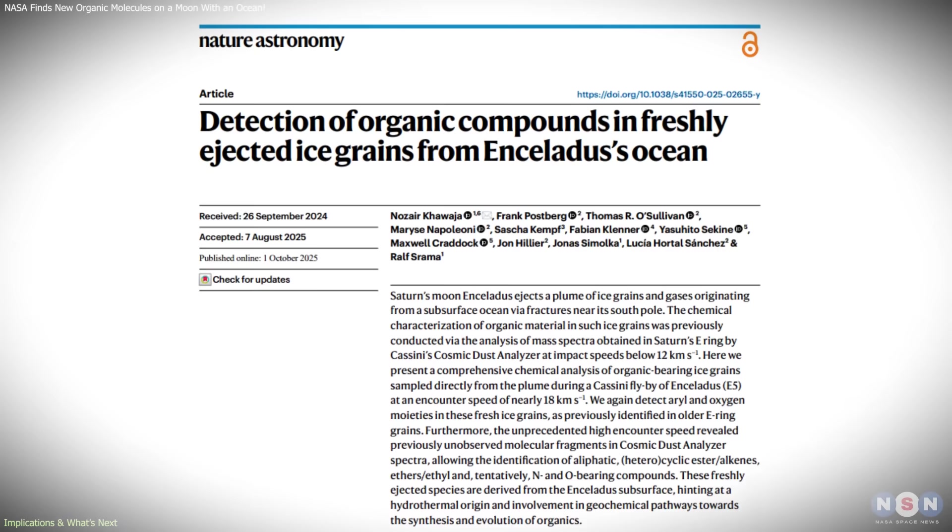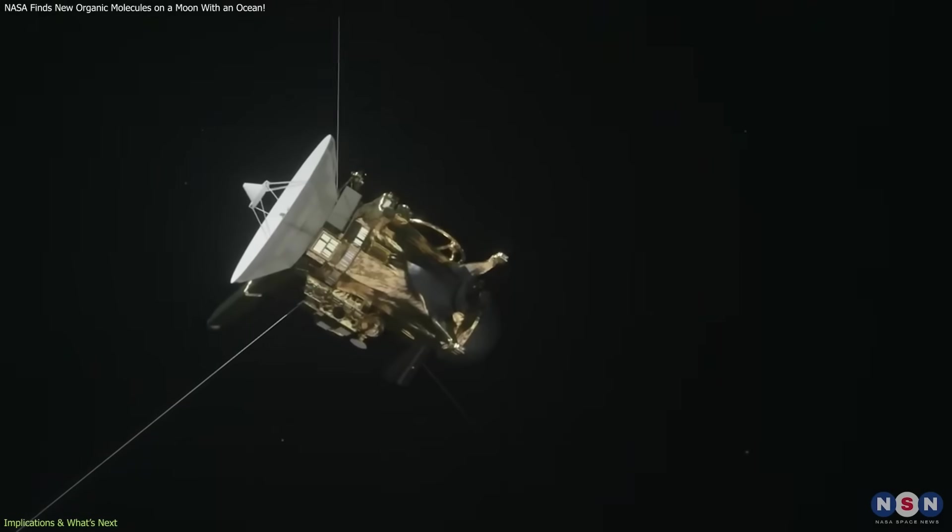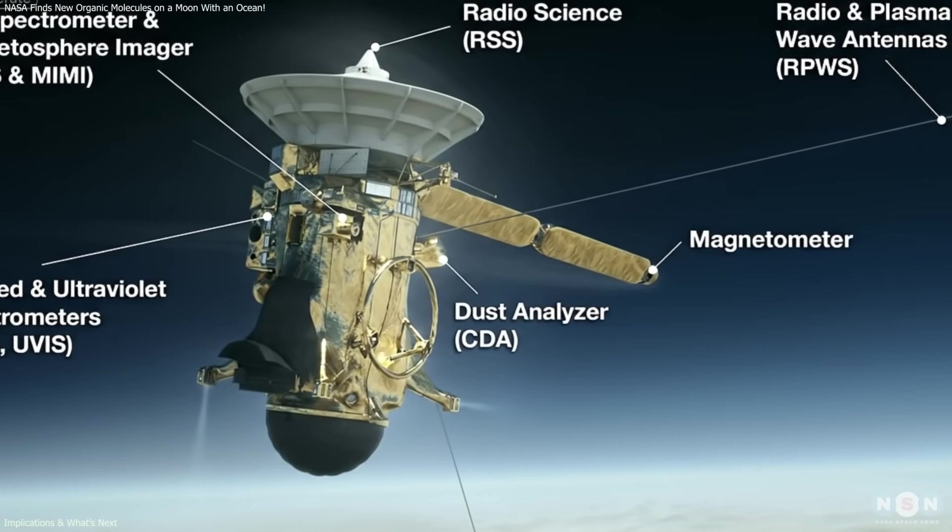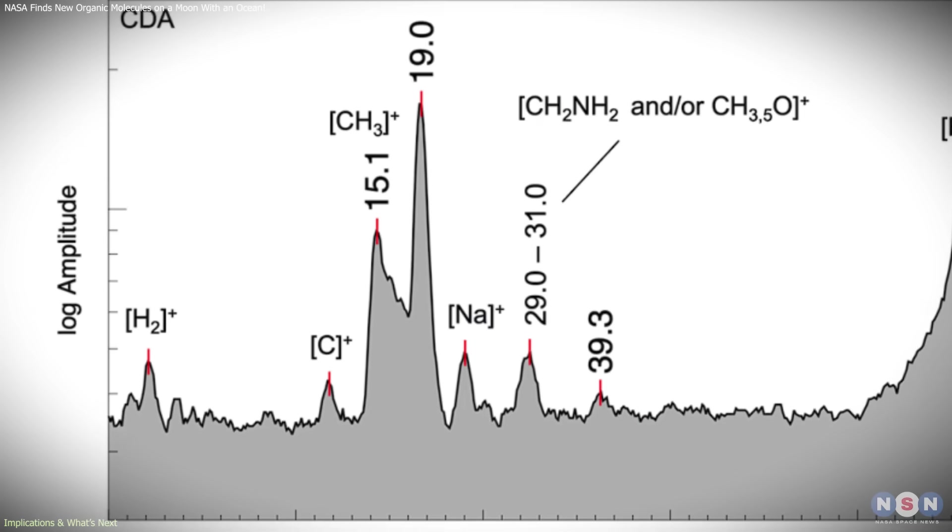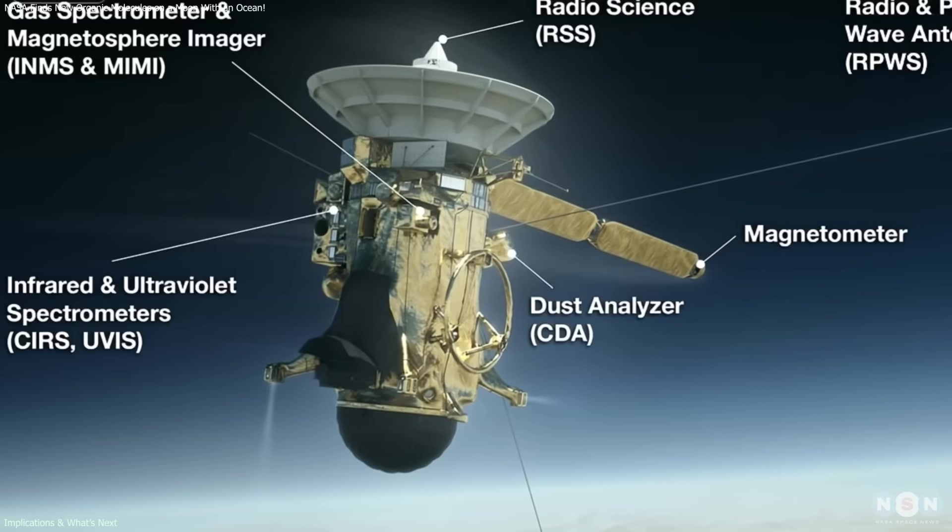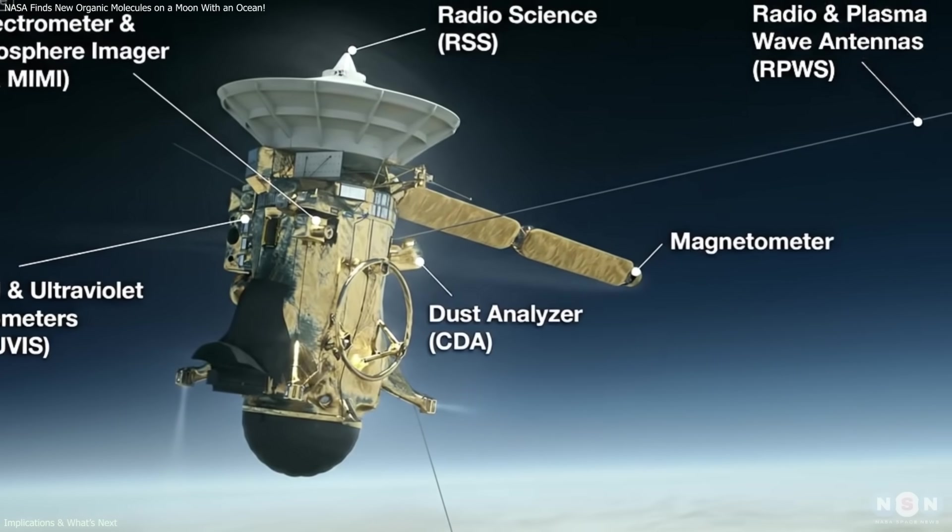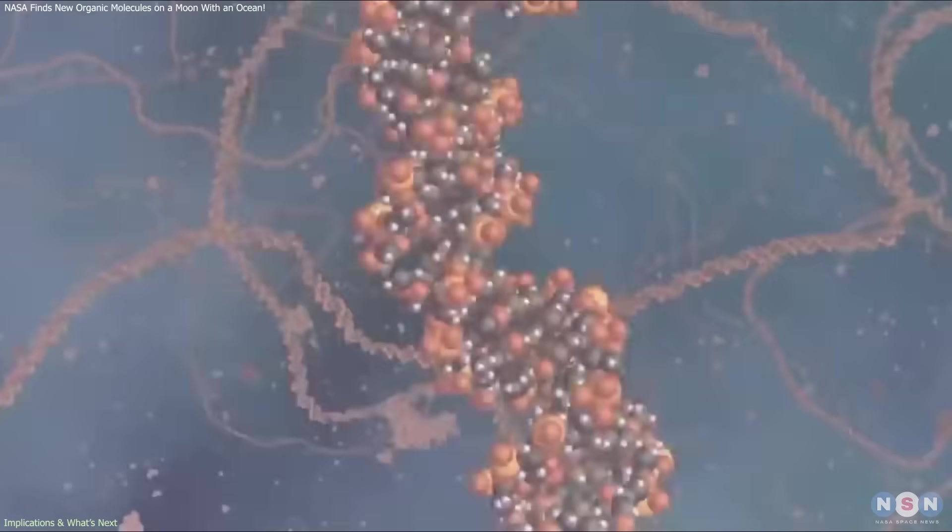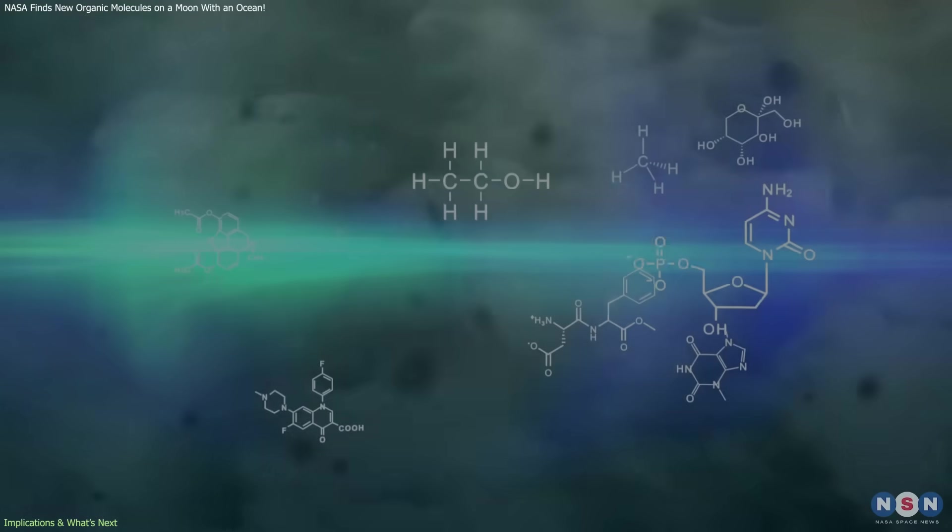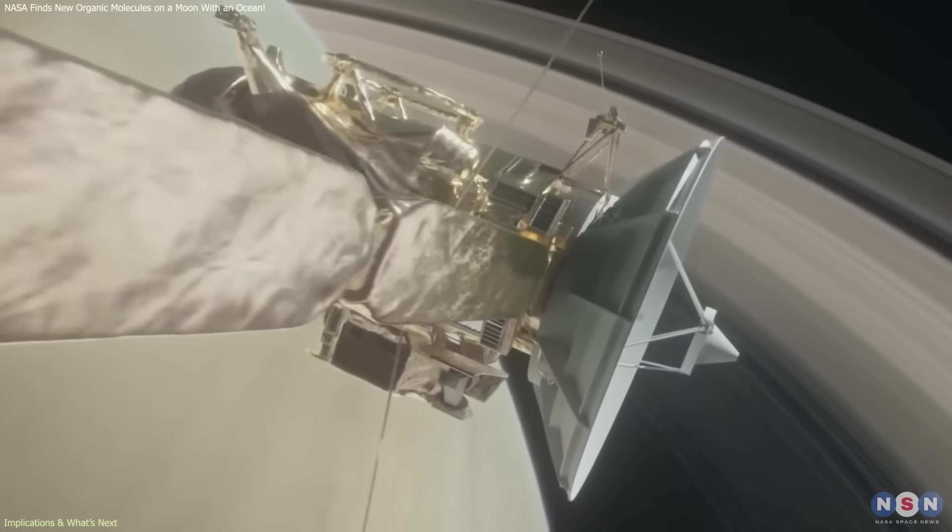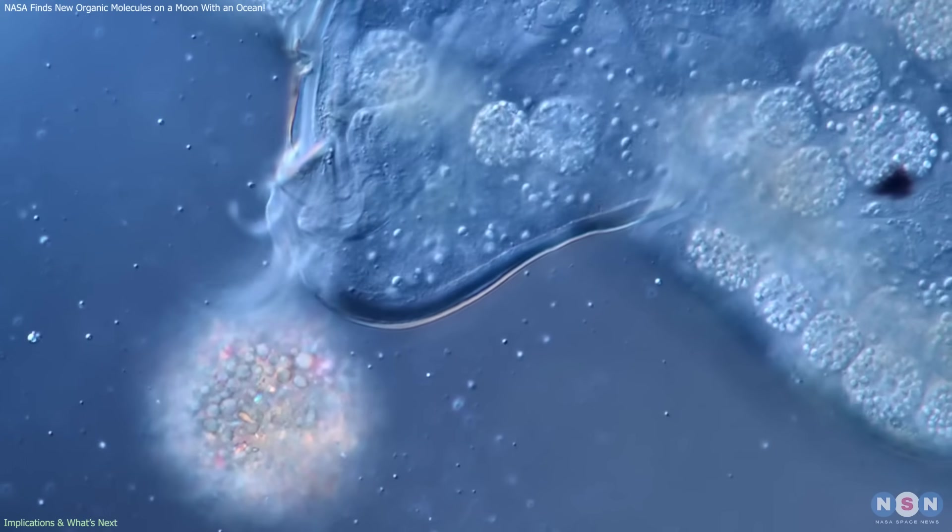However, the current findings also highlight the limits of what Cassini was capable of detecting. The spacecraft was not equipped to identify biosignatures or to determine whether any of the organics originated from biological sources. Its instruments were designed for broad chemical analysis, not for distinguishing between molecules created by geological versus biological processes. As a result, while Cassini revealed that Enceladus' ocean is chemically active, it did not provide the level of detail needed to answer questions about the potential presence of life.